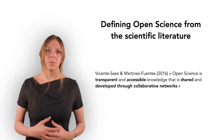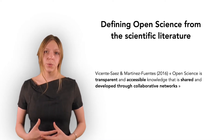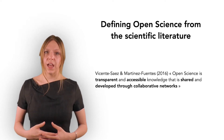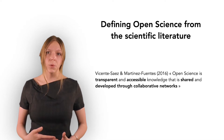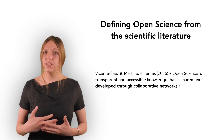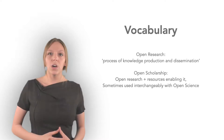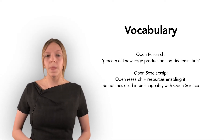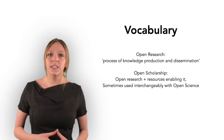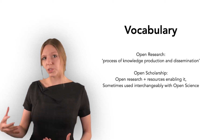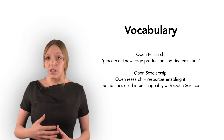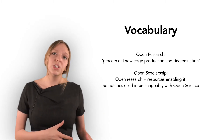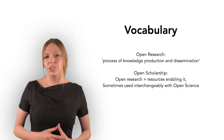Another definition proposed by compiling and reviewing the literature on open science is that open science is transparent and accessible knowledge that is shared and developed through collaborative networks. Open research relates to the process of knowledge production and dissemination. Open scholarship can be understood as including open research plus the resources enabling it, including free open source software, and is sometimes used interchangeably with open science.